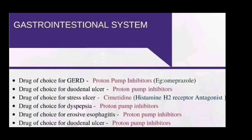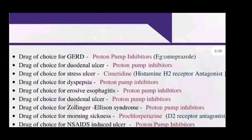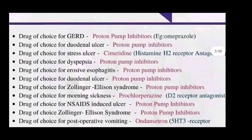The drug of choice for GERD is a proton pump inhibitor, for example omeprazole or pantoprazole. Drugs of choice for duodenal ulcer is also a proton pump inhibitor. Drugs of choice for stress ulcer is cimetidine, which is a histamine H2 receptor antagonist.